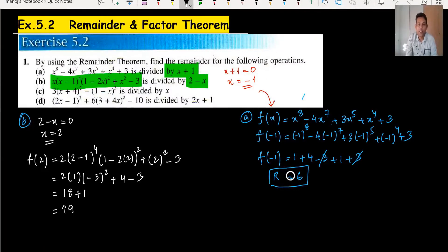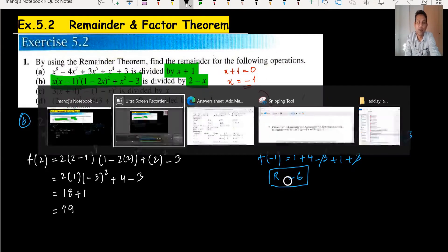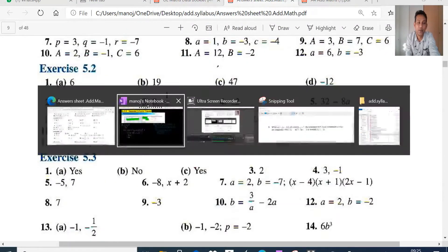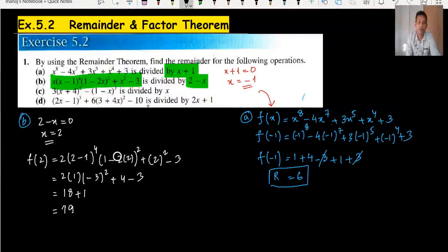The first answer is 6 and the second answer is 19. You can see from the answer key: question 5, answers 6 and 19. Moving to part C.